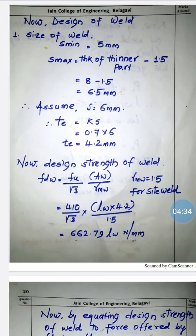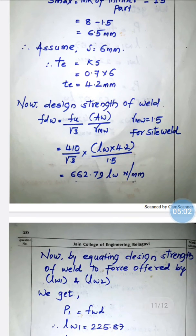We now find the design strength of the weld: fwd = fu / (√3 × γmw) × Aw. Since this is a site weld, γmw = 1.5. Substituting fu = 410, Aw = lw × te, and te = 4.2 mm divided by 1.5, we get the design strength of weld as 662.79 × lw N/mm.